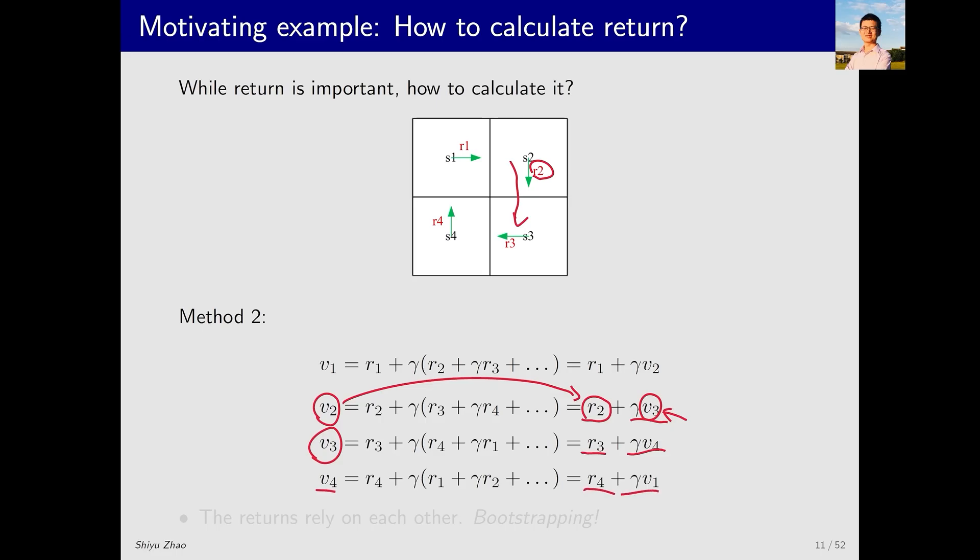So, starting from the definition, we have derived such a set of equations. What do these equations tell us? They tell us that the return obtained from starting in different states relies on the return obtained from starting in other states. That means the returns rely on each other. This idea is known as bootstrapping in reinforcement learning and is a very important concept.